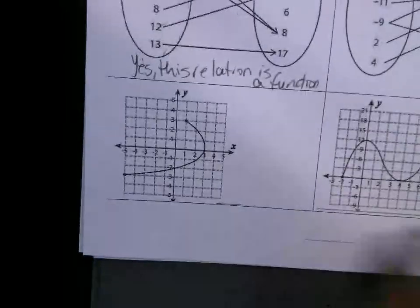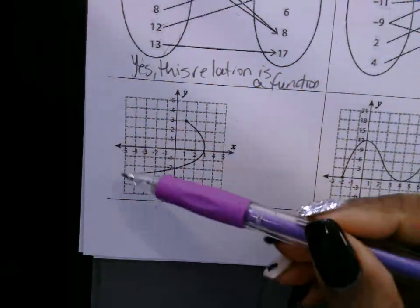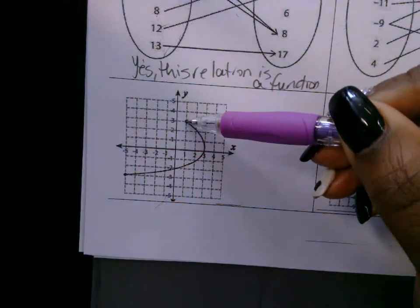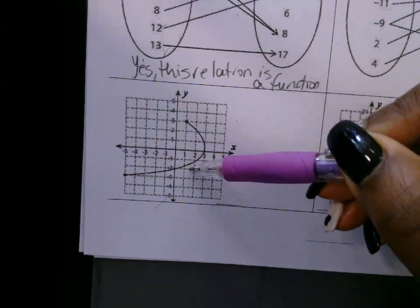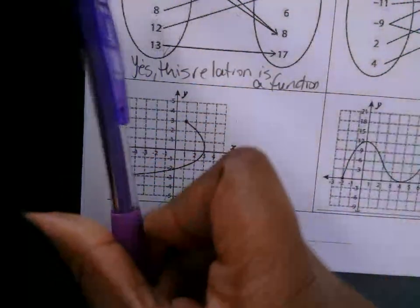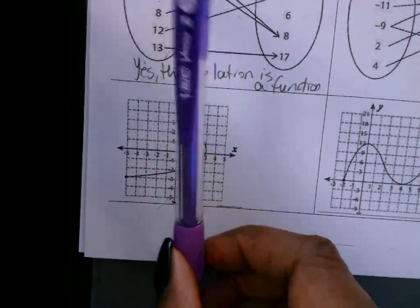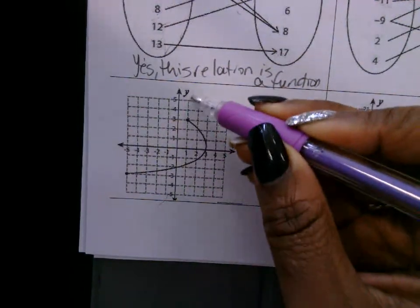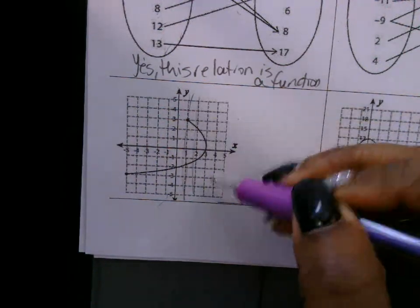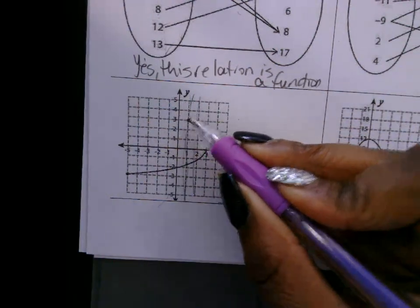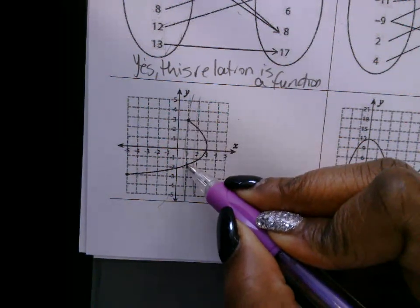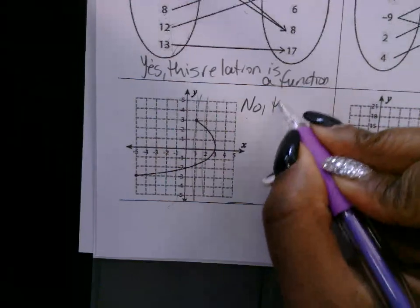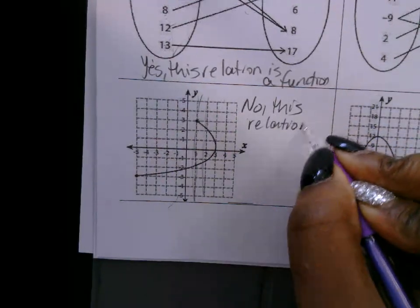Now you have to apply the vertical line test to this graph. So far the x values are not the same — all these x values are different here. But this x value is the same as this x value down here. These ordered pairs would have the same x value. As you move a vertical line from left to right, it fails the vertical line test. The graph touches up here and here — it's on the same vertical line. This ordered pair has an x value of 1 — 1 comma 3 — and this one also has x value of 1, something like 1 comma negative something. So no, this relation is not a function.